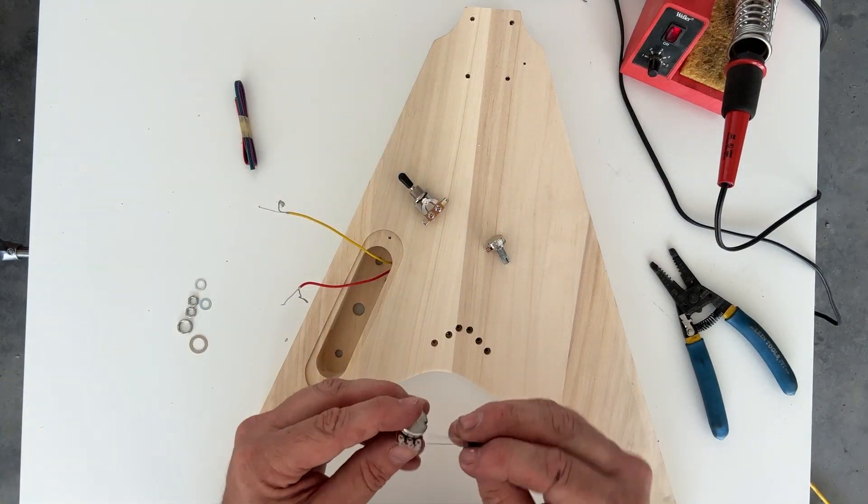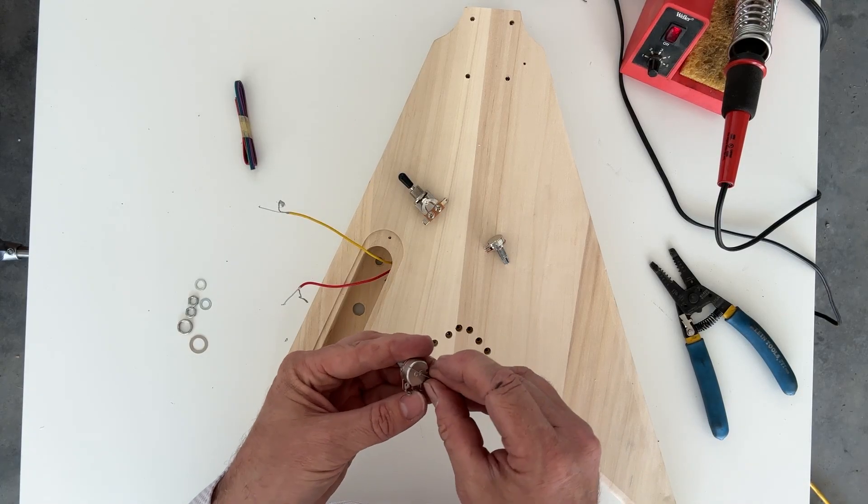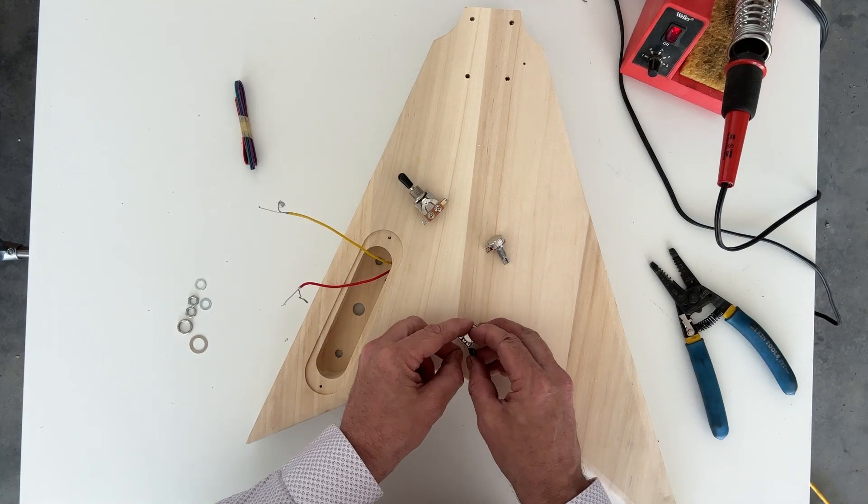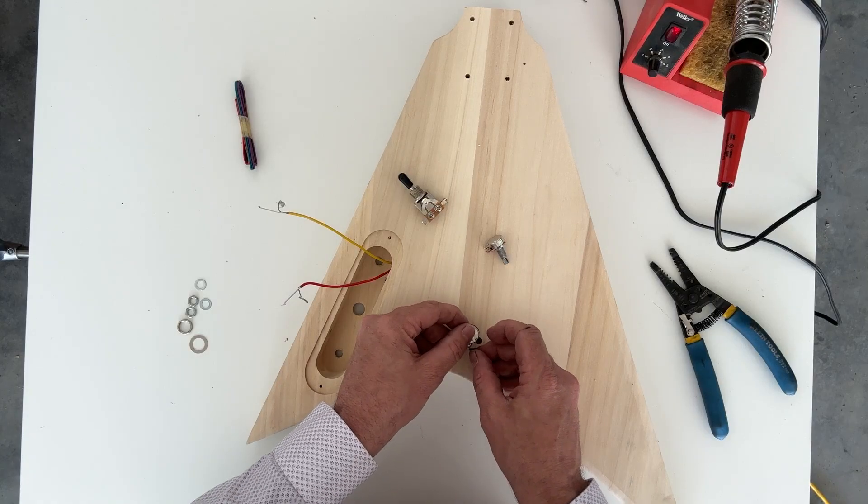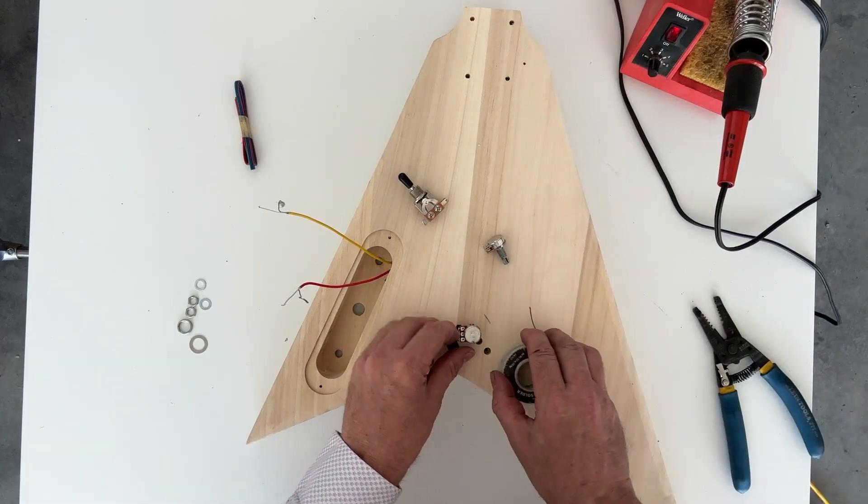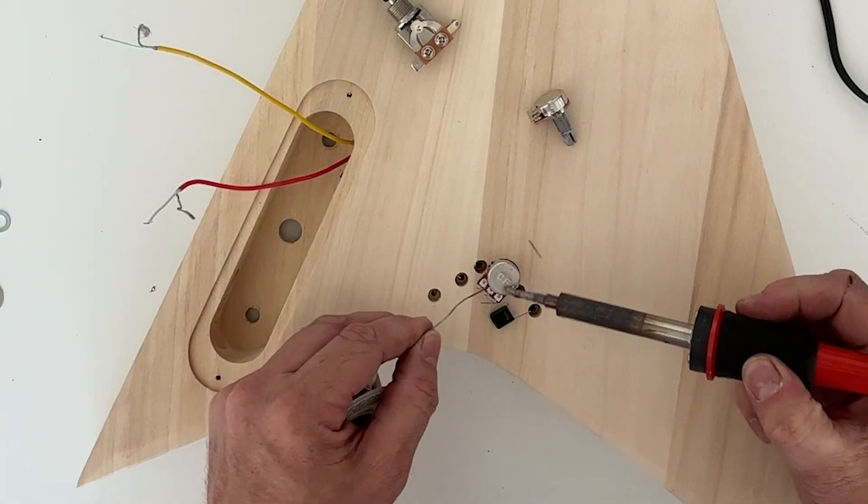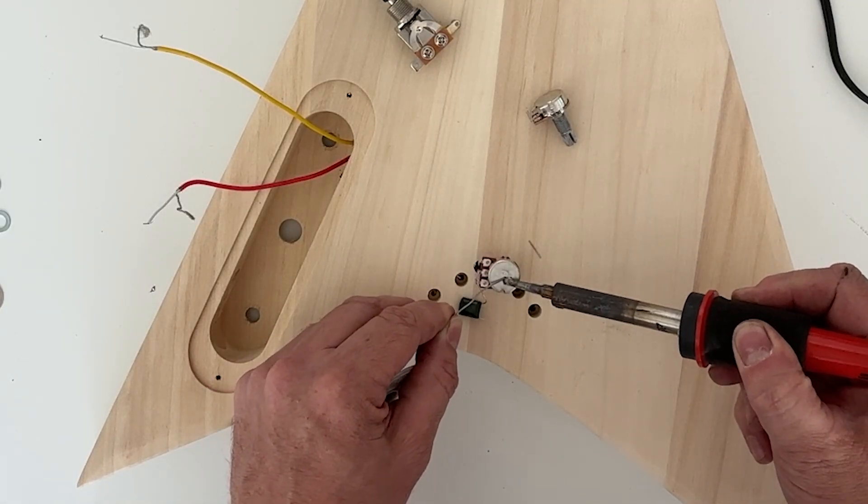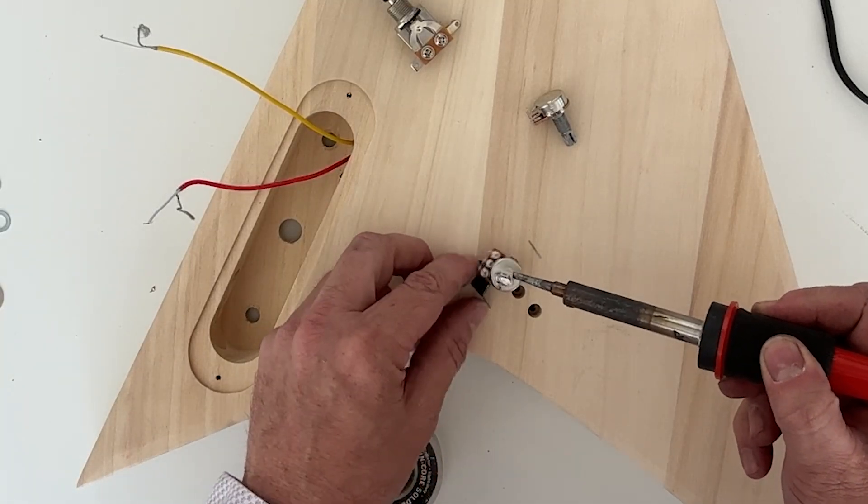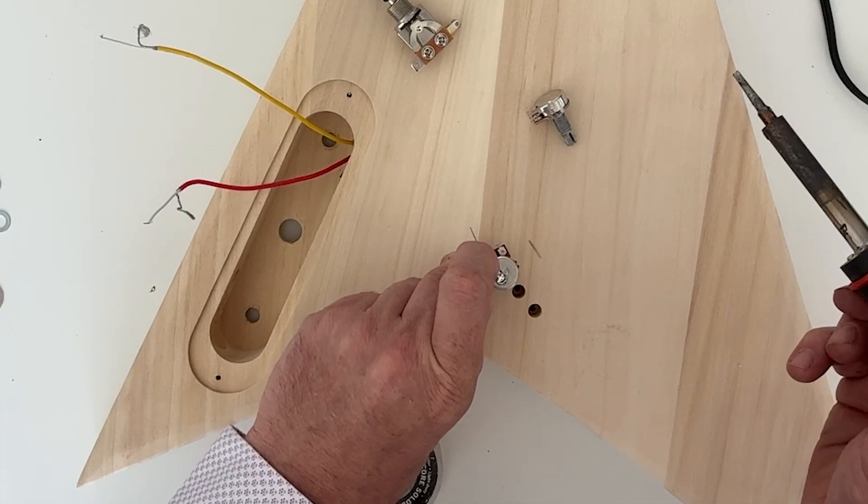On the tone pot, instead of doing that, we're going to put the tone capacitor in that same spot on that third leg. I'll start by soldering this—just put a little pool of solder on the back and then solder that into place.